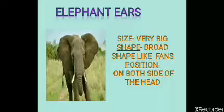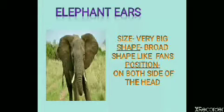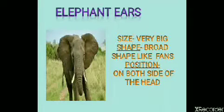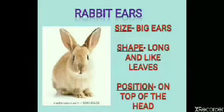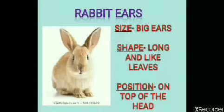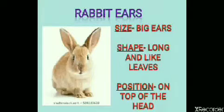For example, look at this picture of the elephant. An elephant has very big ears. The shape of the elephant ears is like fans. It is located on both sides of the head. Look at the picture of the rabbit. A rabbit has big ears. The shape of rabbit ears is long and like leaves.